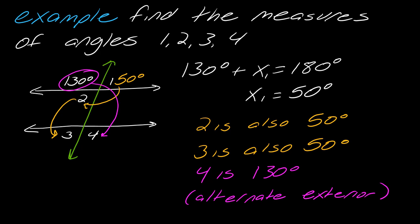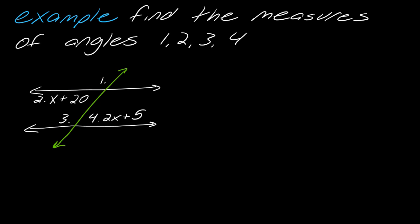There's multiple ways you can think about why three is 50 but three is also 50 and then using alternate exterior angles I would know that four is 130. So you just want to be familiar with how these relationships work out. I have a harder one here.